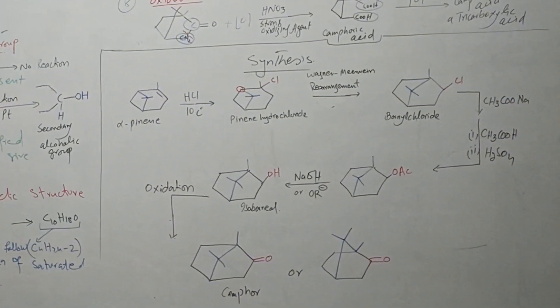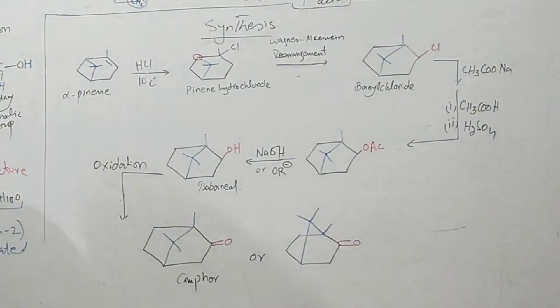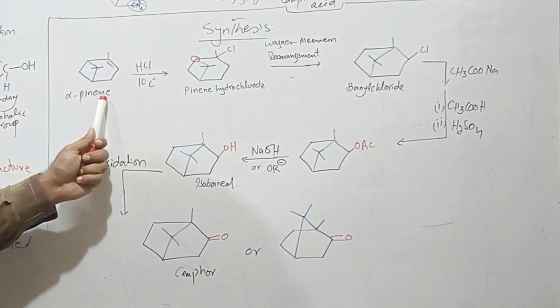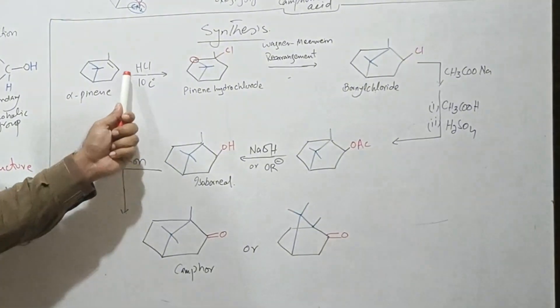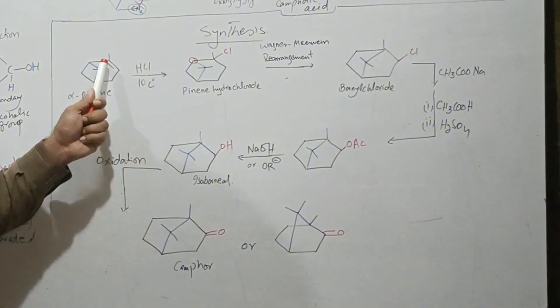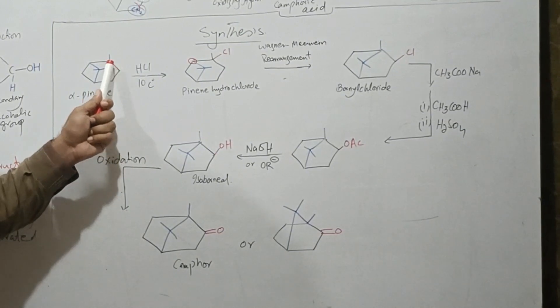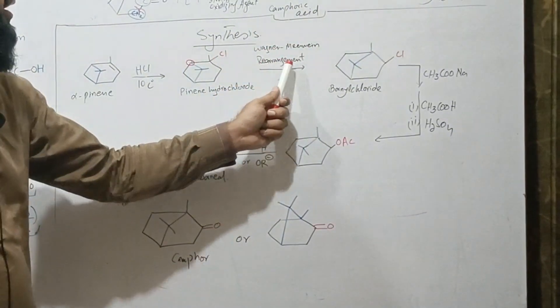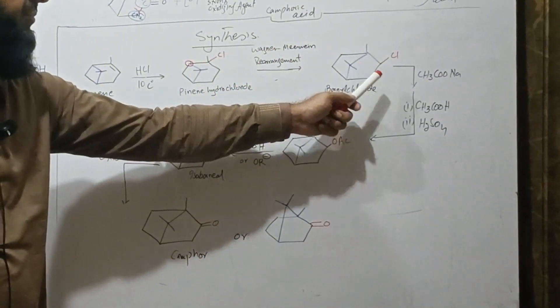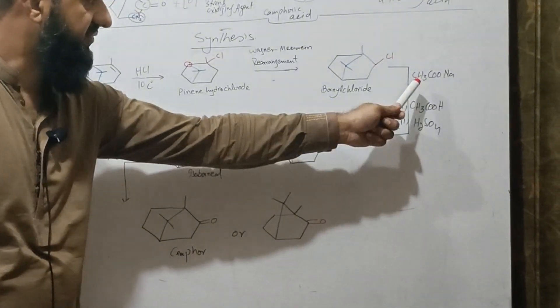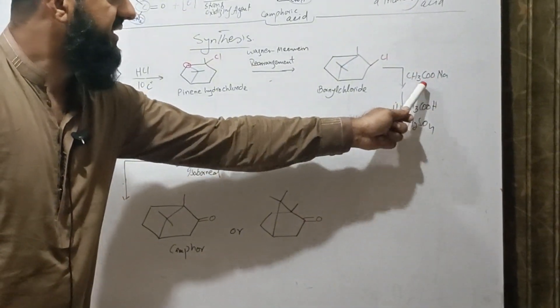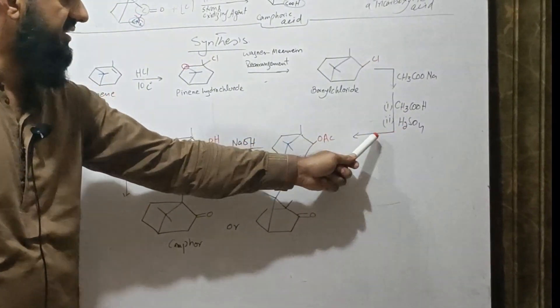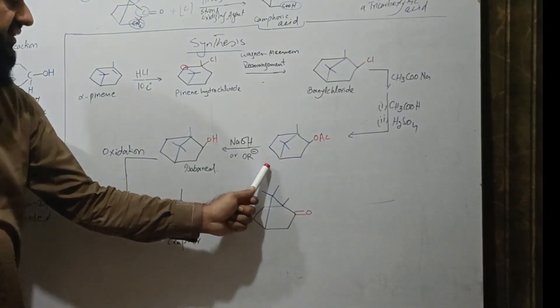Now we see the synthesis. There are many methods to synthesize camphor. I will use common method from alpha-pinene. When alpha-pinene is treated with HCl, then HCl is added in these two carbons and we get pinene hydrochloride. It undergoes Wagner-Meerwein rearrangement and we get this structure, which upon reaction in two steps, first sodium acetate then in acetic acid followed by addition of sulfuric acid, we get this structure.